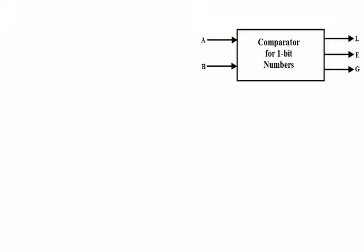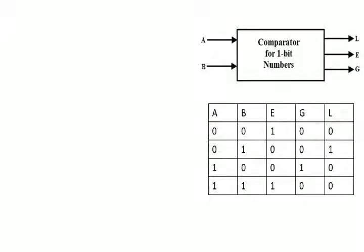Here we have a schematic that shows a comparator for 1-bit numbers, which compares two inputs namely A and B, and it produces three outputs: greater, equal, and less. It simply indicates A greater than B, A less than B, and A equals B. Based on this we will also check its truth table.